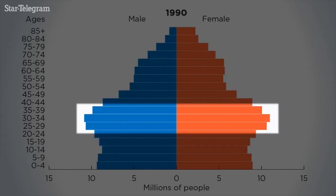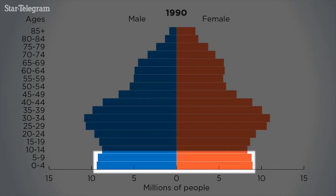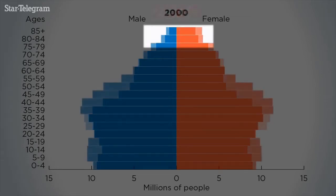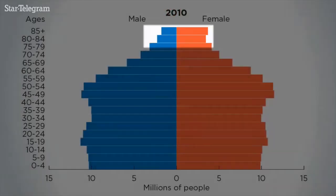Already by 1990, the population is aging, even before boomers reached middle age. At the bottom of the pyramid, we can see the young millennial generation, while at the top of the pyramid, there are more older women than men, as women tend to live longer.